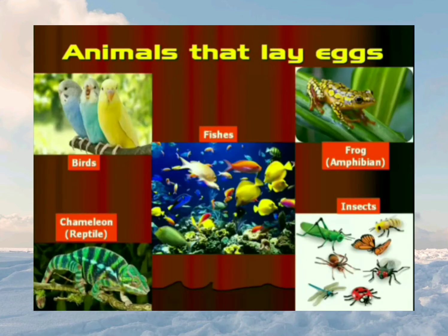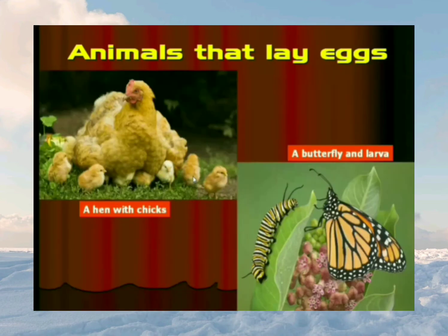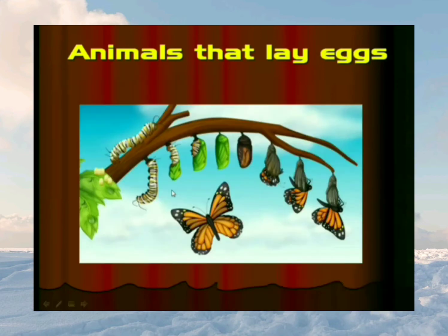Now let's learn about animals that lay eggs. Birds, fishes, reptiles, amphibians, and insects all lay eggs. Some young ones that come out after hatching look like the parent animals, while some look very different from their parents, but as they grow they look similar to their parents.